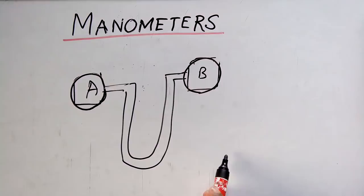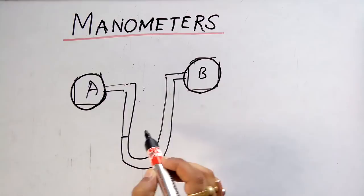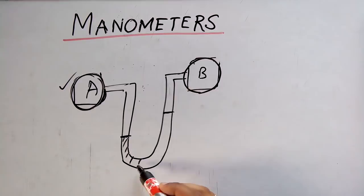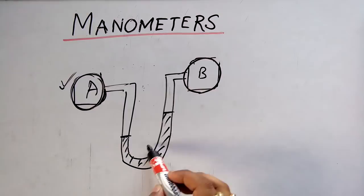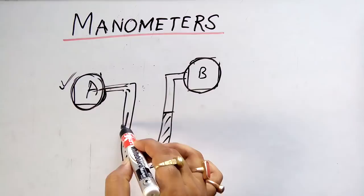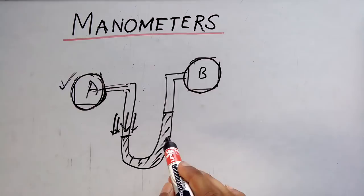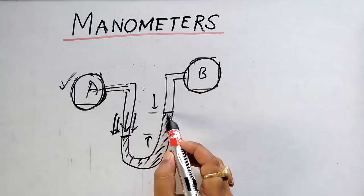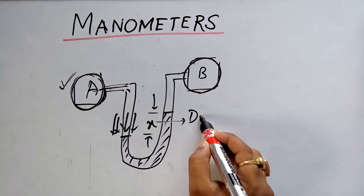Inside a manometer there is a manometric fluid. Suppose the pressure of A is more — the manometric fluid will rise towards B. Because the fluid in A will push the manometric fluid with much more pressure. This difference between the two levels of the manometric fluid, suppose X, is known as the deflection of the manometer.